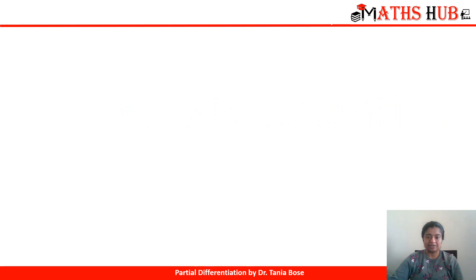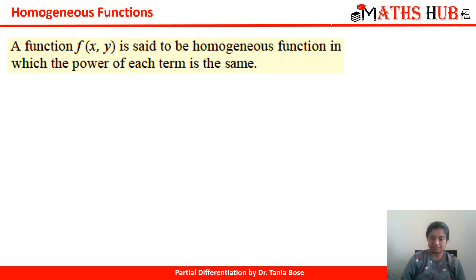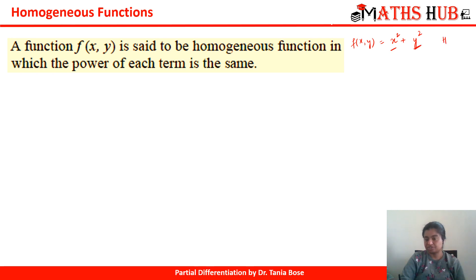So what are homogeneous functions? A function is said to be homogeneous in which the power of each term is the same. For example, f(x, y) = x² + y² — the first term has power 2 and the second term has power 2, so this is indeed homogeneous.